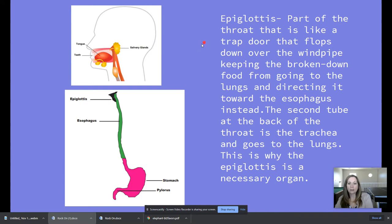So the second tube at the back of your throat is the trachea and that one goes to the lungs. That's where we don't want our food to end up, right? We don't want to get food or water in our lungs. That's when we start to choke. This is why the epiglottis is a very necessary organ. It's that little flap that closes and gets the food into the right place for you.